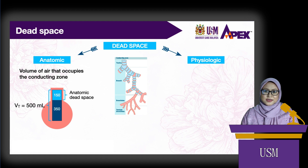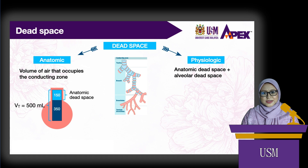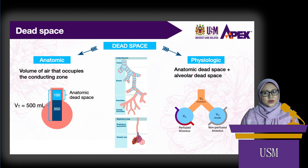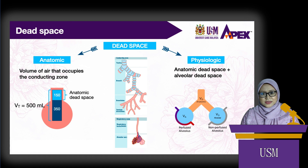Physiologic or total dead space is equal to anatomic plus alveolar or functional dead space. Alveolar dead space is the volume of air that fills the respiratory zone, most importantly the alveoli, but does not take part in gas exchange — meaning that gas reached the alveoli but did not involve in gas exchange. In a healthy adult, alveolar dead space can be considered negligible. Therefore, physiologic dead space is equivalent to anatomic dead space, about 150 milliliters.